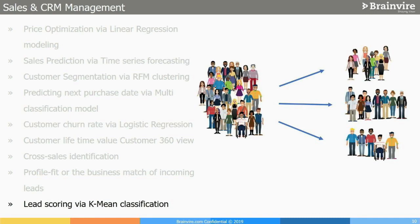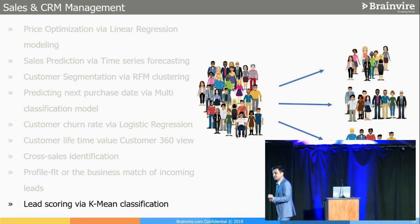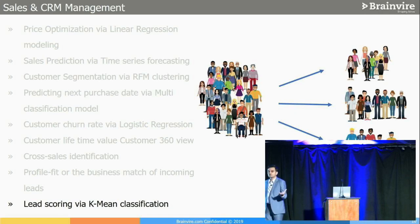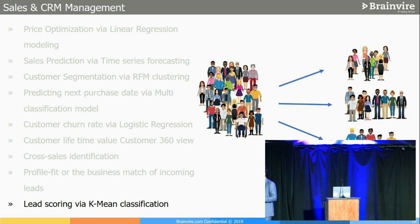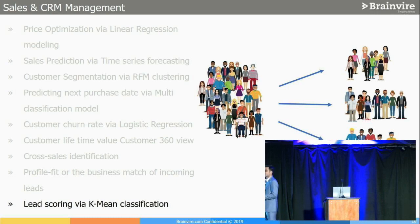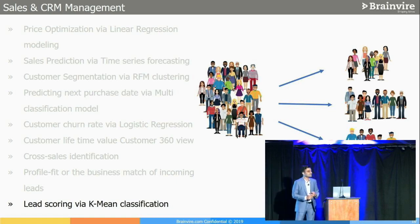Another area is lead scoring — as mentioned in the keynote, lead scoring can now happen automatically. It's also about customer classification. If you're in B2B and a customer is worth $10 million, you assign higher lead scoring, provide better services and personalized touchpoints. You bifurcate customers across different variables and determine where they stand and who to assign them to — using K-means clustering for classification.